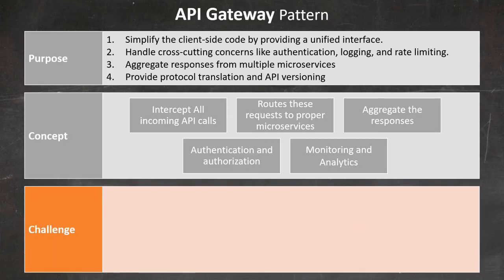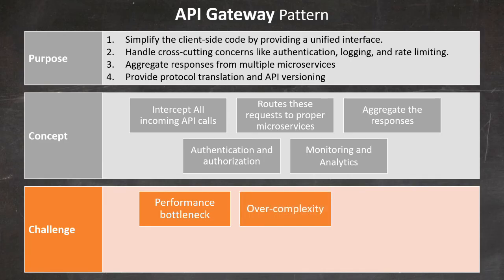Let's talk about the challenges associated with this pattern. First, performance bottleneck — if not properly designed, the API Gateway can become a single point of failure and a performance bottleneck. Ensure proper scaling and caching mechanisms are in place. Second, over complexity — adding too much business logic to the API Gateway can make it difficult to maintain and scale. Keep the Gateway focused on routing, aggregation, and cross-cutting concerns. Then, there's a lack of versioning — failing to implement proper API versioning can lead to breaking changes for clients. Implement a robust versioning strategy from the start.